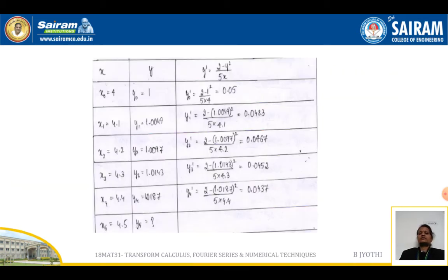Let us compute the table: x₀, x₁, x₂ etc. have been given. Y₀ values are also given. Let us compute the y dash values by substituting the respective x₀, y₀, x₁, y₁, x₂, y₂, x₃, y₃ and x₄, y₄ to get y₄ dash.